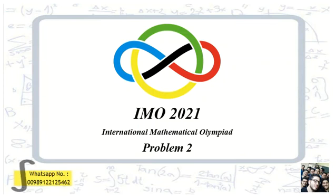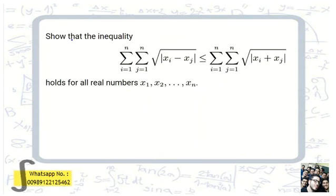IMO 2021 International Mathematical Olympiad problem number two. The problem is from algebra: show that this inequality holds for all real numbers x1, x2, ..., xn. As I said before, one of the most important ideas for solving IMO problems — and also how we solved the first problem of this exam — is to consider small examples of n. So we first start by considering the problem when n equals one.